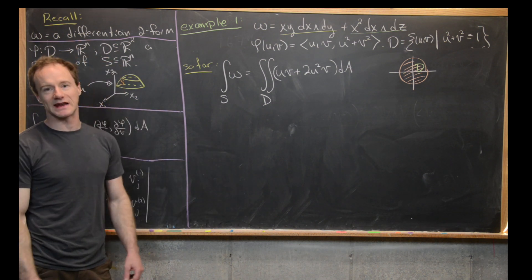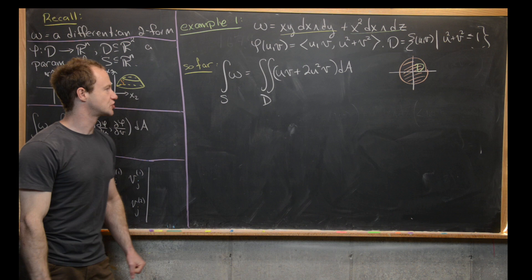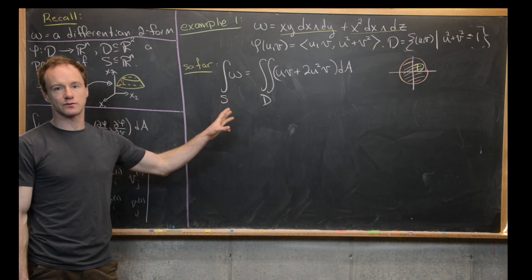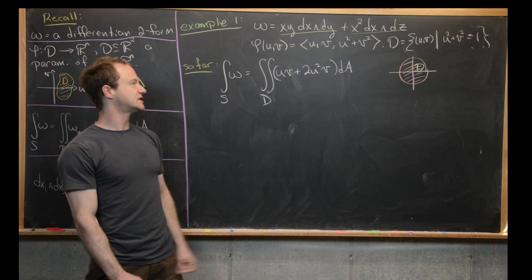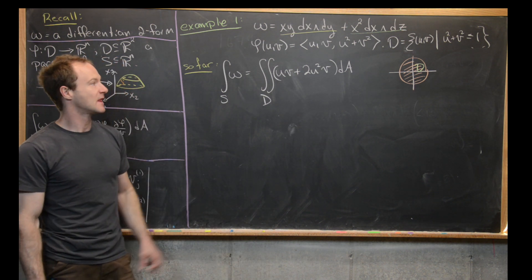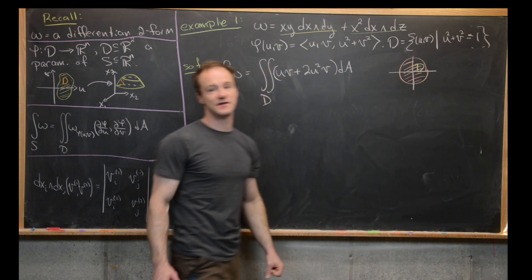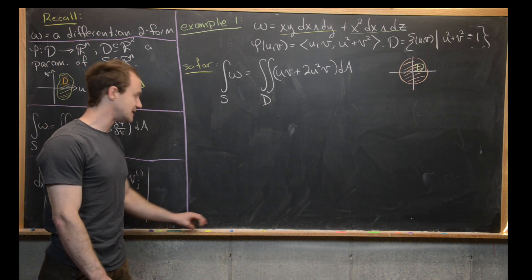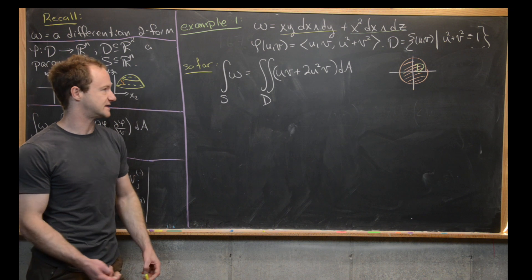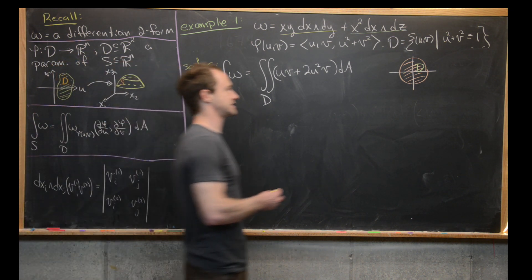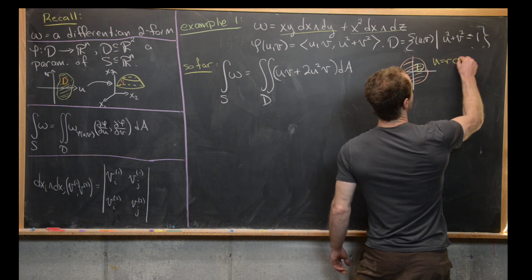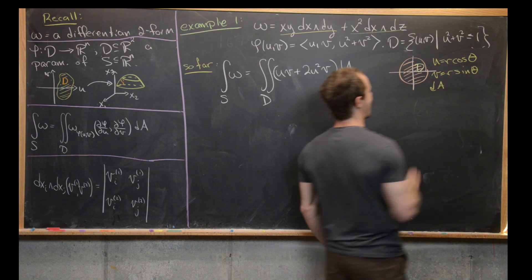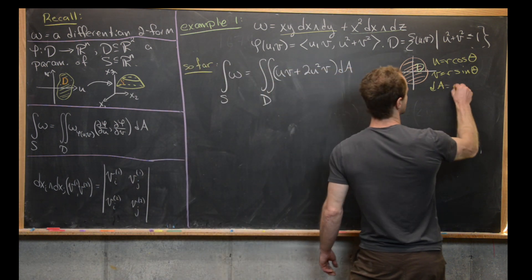On the last board, we got down to this point. The integral of our differential two-form over the surface will be given by the double integral over D of u·v + 2u²·v, where D is the unit disk. Since that is a circular region, it really suggests we should use polar coordinates. We let u = r·cosθ, v = r·sinθ, and the differential area component in polar coordinates is r dr dθ.